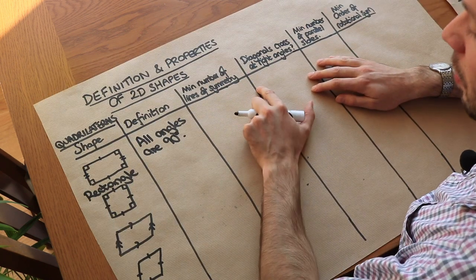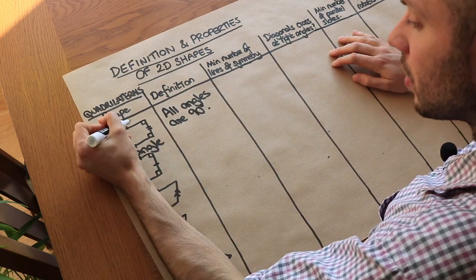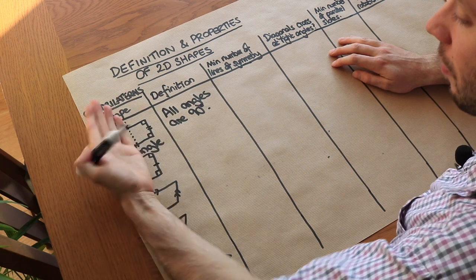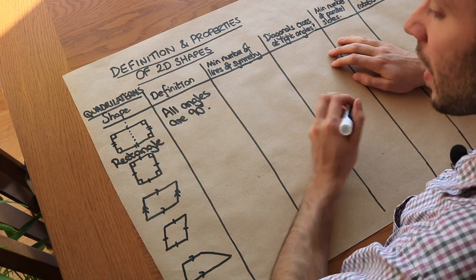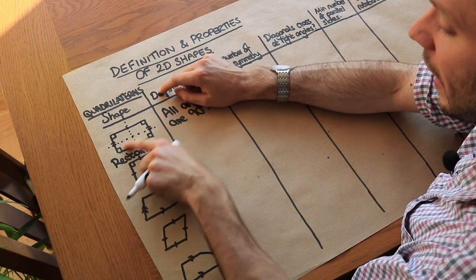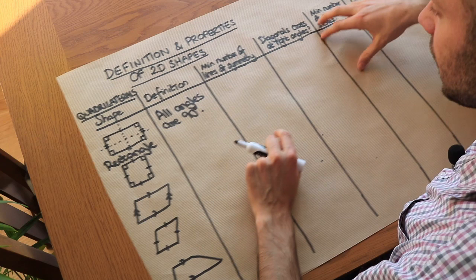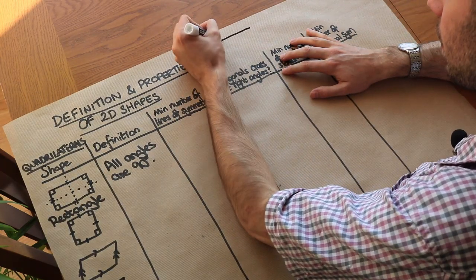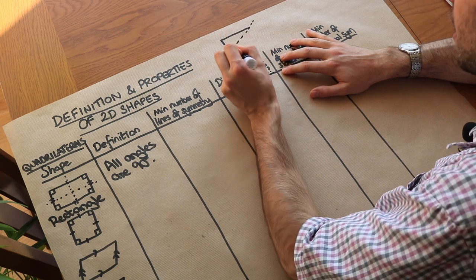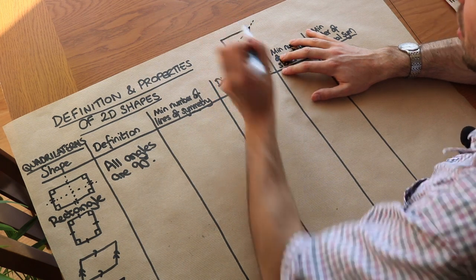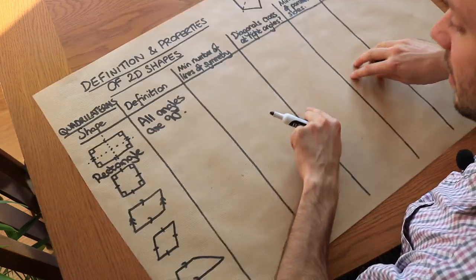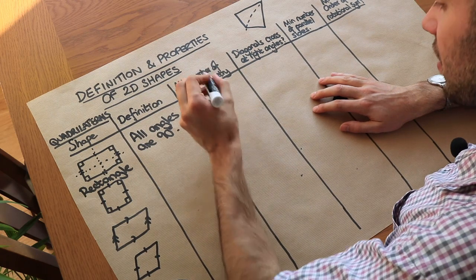Let's consider the number of lines of symmetry a rectangle has. There is a line of symmetry horizontally and one vertically, but the diagonal is not a line of symmetry. If you reflected the rectangle in its diagonal, you'd get a kite shape, not a rectangle. So the minimum number of lines of symmetry is two.